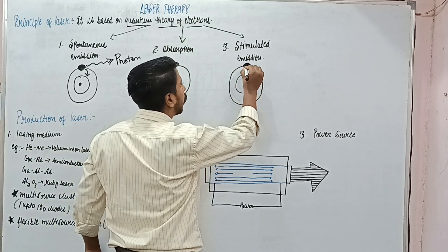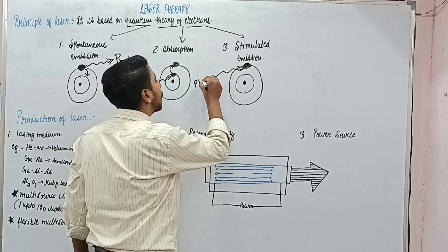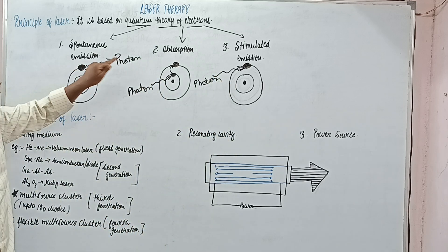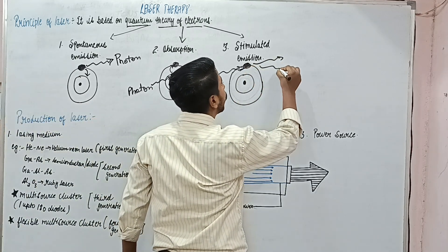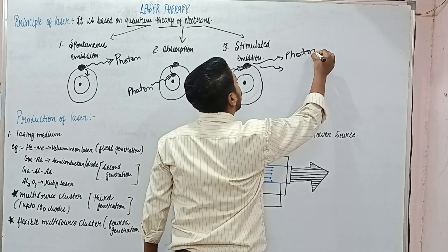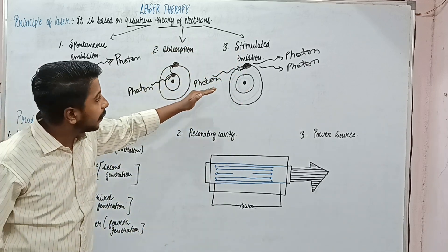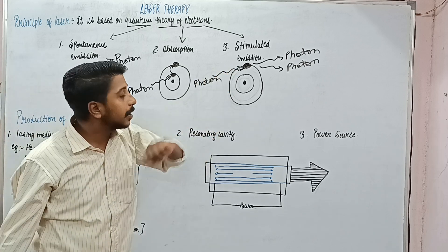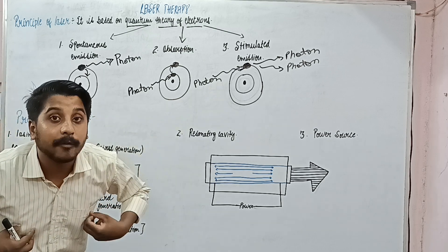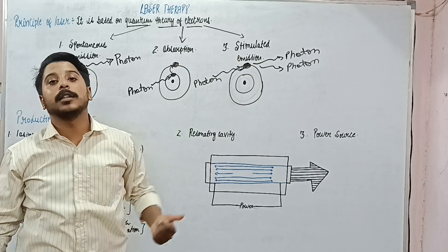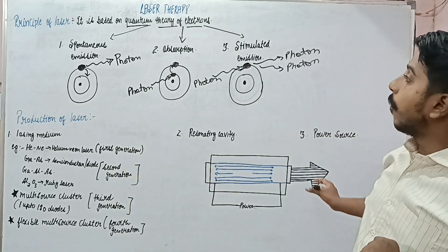The third principle: if an electron is in the higher energy level and it gets hit by a photon, it was already going to produce one photon, but now it is stimulated by another photon — so two photons will be produced. This is called stimulated emission, because the incoming photon is stimulating the electron, which is already at a higher energy level, causing it to release a lot of energy in the form of two photons.